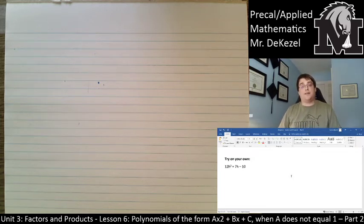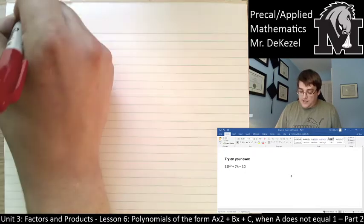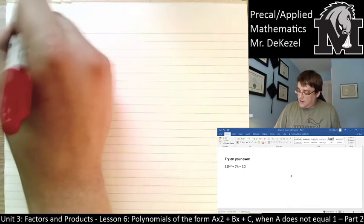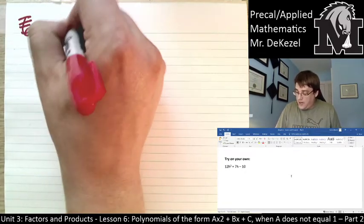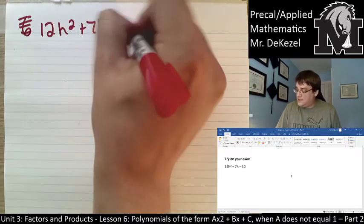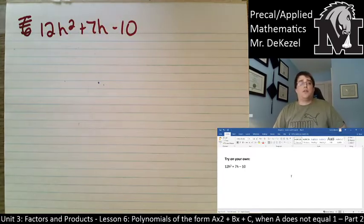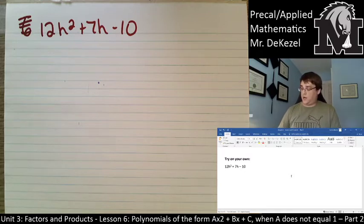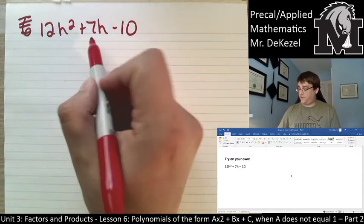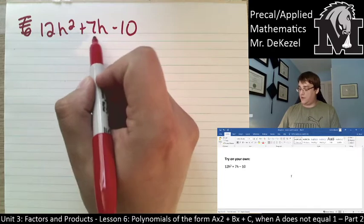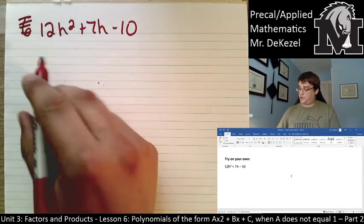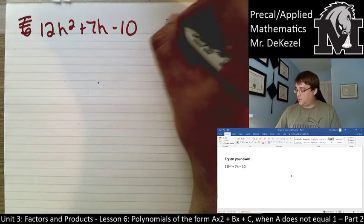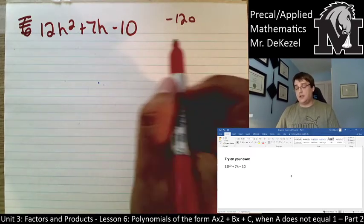Okay, welcome back. Let's give it a go. We have 12h squared plus 7h minus 10. Greatest common factor is 1. Let's do decomposition. So, finding out what two numbers we can break this 7 into. 12 times minus 10 is negative 120. So, I need two numbers that multiply to negative 120 and add to 7.